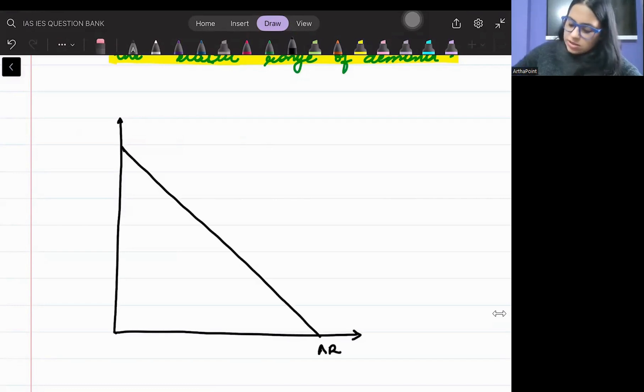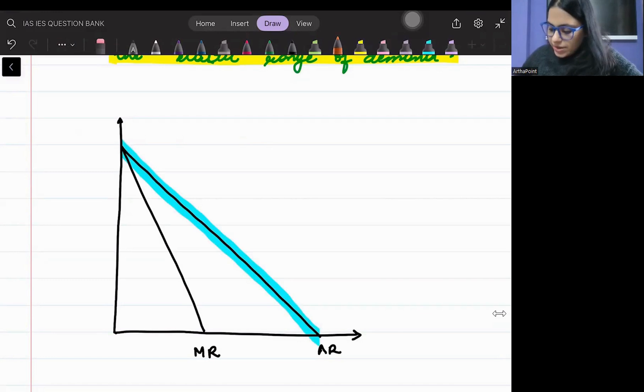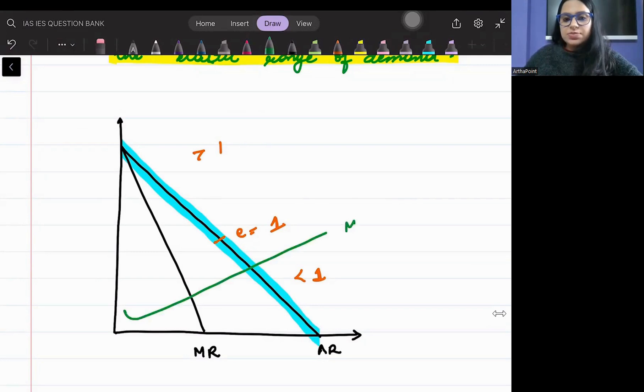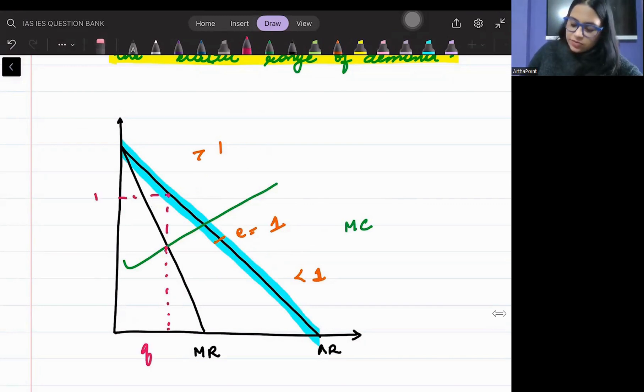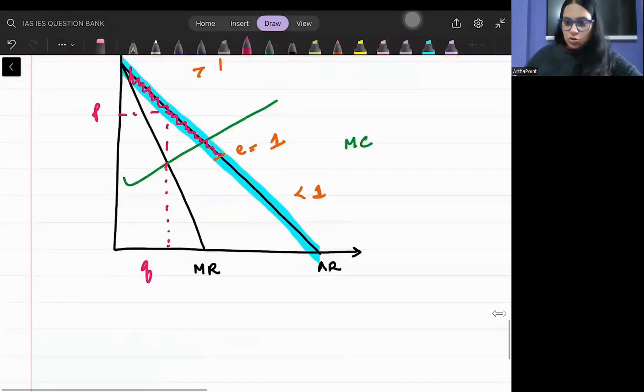One more thing here. This is my AR, this is my MR. We know that this is the demand curve, and the midpoint of the demand curve represents demand elasticity equal to one. This is less than one, this is greater than one. Now suppose I intersect the marginal cost anywhere, this is my MC. When we find the intersection quantity and take it to the AR curve, you will always see it will be in the elastic region.